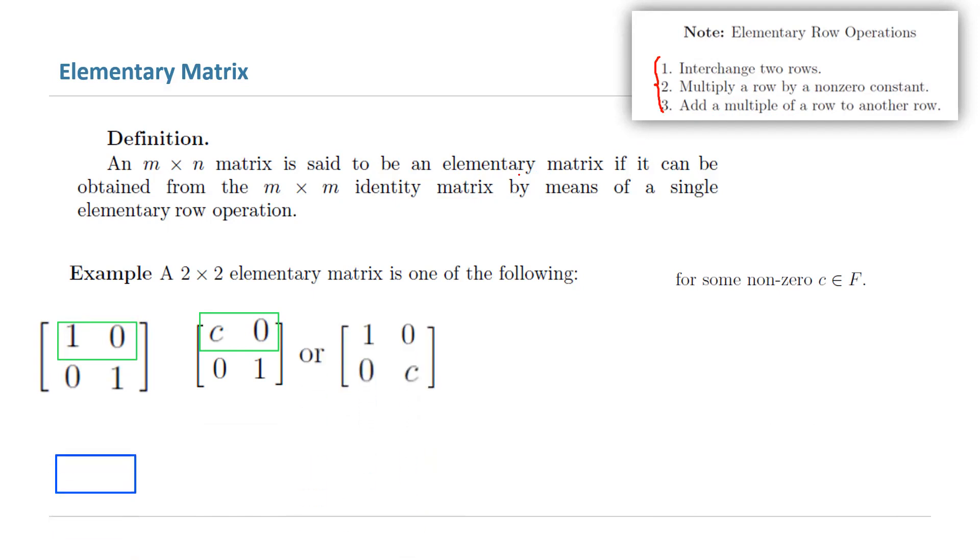You could also multiply the second row by C and create another two by two matrix, which is an elementary matrix.